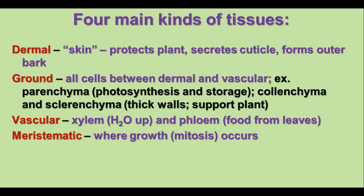The fourth kind of tissue is meristematic tissue. This is where growth occurs. When the plant is growing, you're looking at growth in the meristematic areas, both in the length of the stem and the root, and also in the width of the stem.